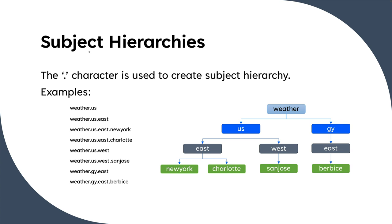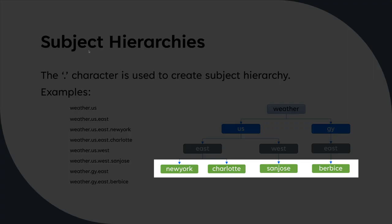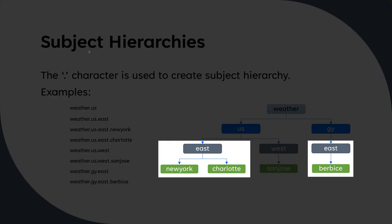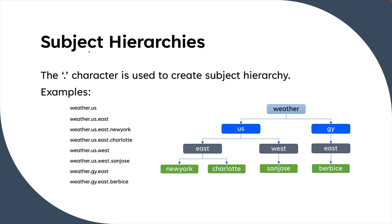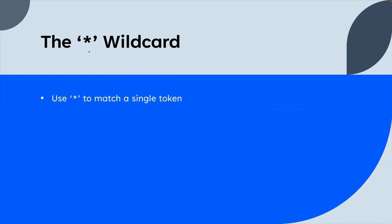You can fill out the hierarchical chart further and essentially pick which one of those subjects you want to publish to or subscribe to, or a collection of them. You can exploit this hierarchy — for example, saying 'I want all messages for all cities in the eastern regions regardless of whether it's in the US or Guyana.' This is done with wildcard characters. The first wildcard is the star, and the star matches a single token.